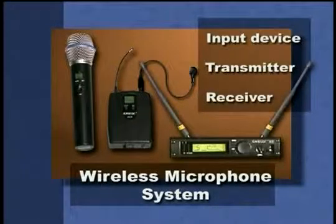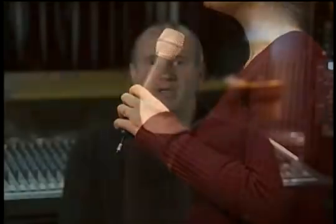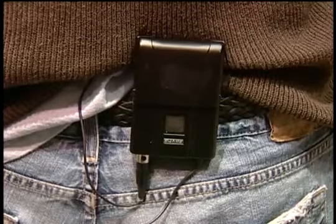A wireless system consists of three main components: an input device, a transmitter, and a receiver. The input device provides the audio signal that will be sent out by the transmitter. It may be a microphone such as a handheld, a headset, or even a lavalier type. There are even wireless systems designed for use with electric guitars, but the input device to a belt pack type transmitter is most often a lavalier or headset type microphone.